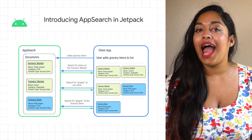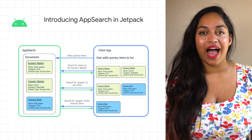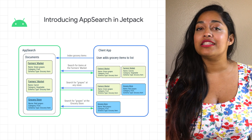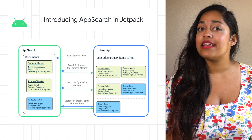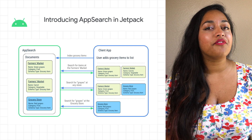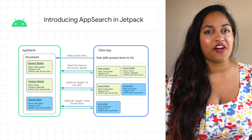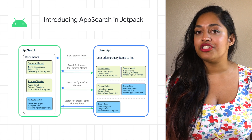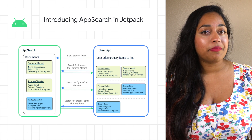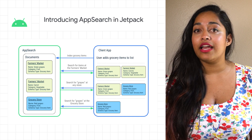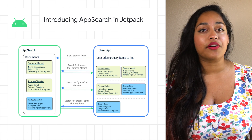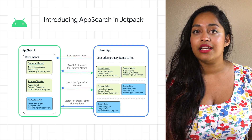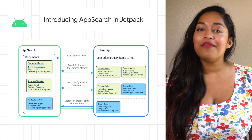The Android team is introducing App Search in Jetpack, now available in Alpha. App Search is an on-device search library which provides high-performance and feature-rich full-text search functionality. With App Search, your application can offer offline search capabilities, have lower latency for indexing and querying over larger data sets compared to SQLite, and provide relevant search results, and more.